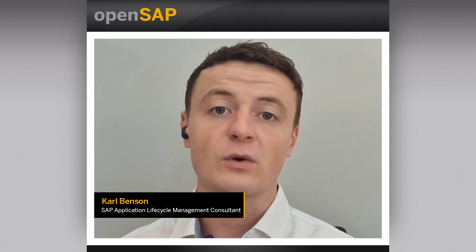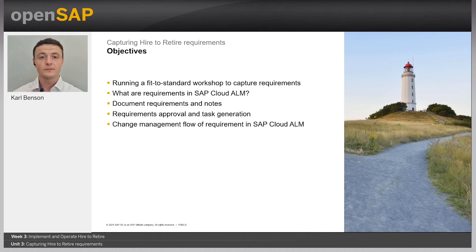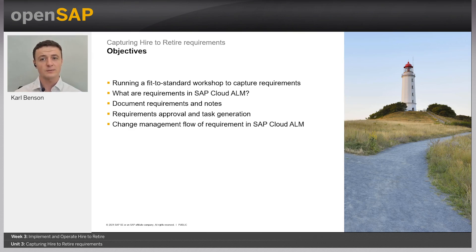The focus of this unit is to build on what we covered in unit two from a capabilities perspective and a project perspective. We'll be looking more at the requirements within SAP Cloud ALM and the execution of a fit-to-standard workshop. The objectives of this unit are to look at what a fit-to-standard workshop is and how SAP Cloud ALM supports it.